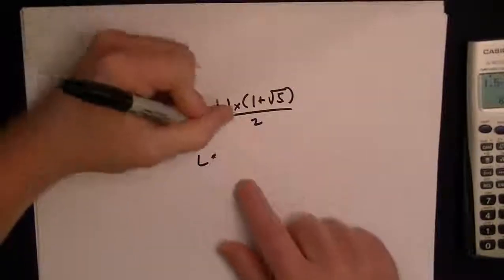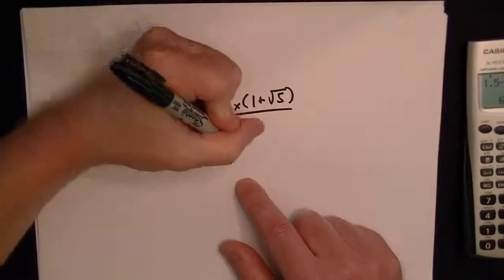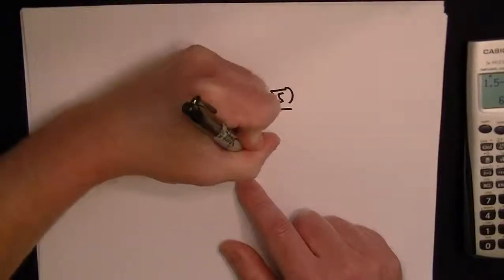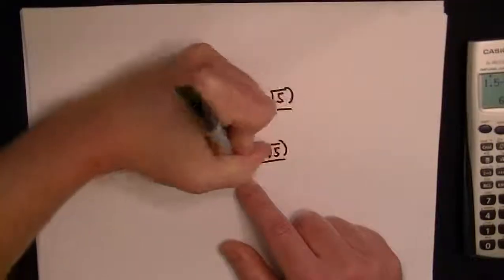So length is equal to, well the w is going to be equal to 10, so we'll just fill that in times 1 plus the root of 5 all over 2.